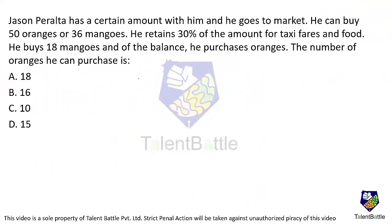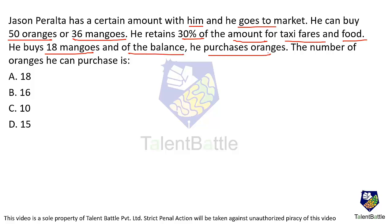Jason Peralta has a certain amount with him and he goes to the market. He can buy 50 oranges or 36 mangoes. He retains 30% of the amount for taxi fares and food. He buys 18 mangoes and with the balance, he purchases oranges. The number of oranges he can purchase is?